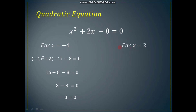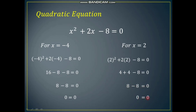Now if we substitute x equal to 2, the left hand side becomes 2 squared plus 2 times 2 minus 8, which gives 4 plus 4 minus 8 equals 0. So this equation is again satisfied for x equal to 2. Therefore x equal to minus 4 and x equal to 2 are the two solutions of this quadratic equation.